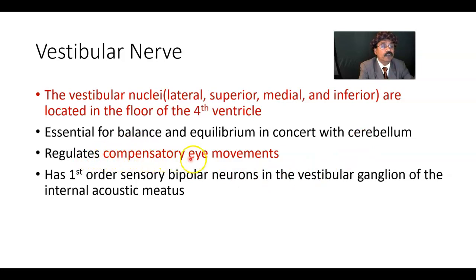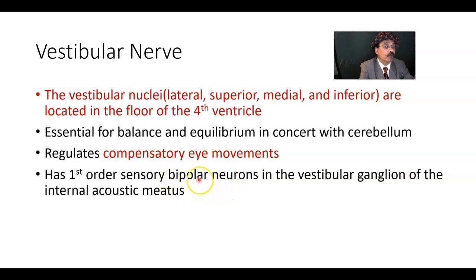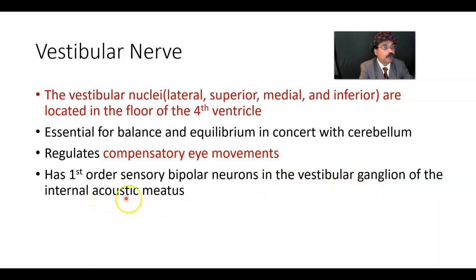Fibers from the vestibular nuclei go to the cerebellum, and fibers from the cerebellum come back to the vestibular nuclei. It regulates compensatory eye movement because the vestibular nerve is connected to the medial longitudinal fasciculus — a fasciculus connecting the third, fourth, sixth, and eighth cranial nerves. It has first-order sensory bipolar neurons; for special senses we have bipolar neurons, with one part being the axon and another the dendrite.